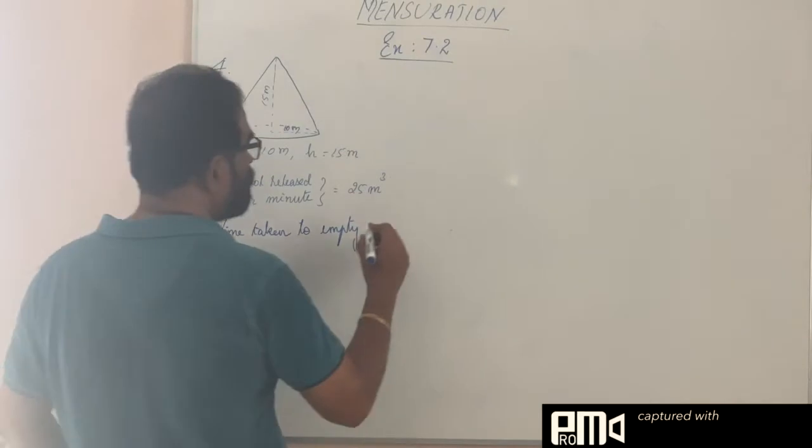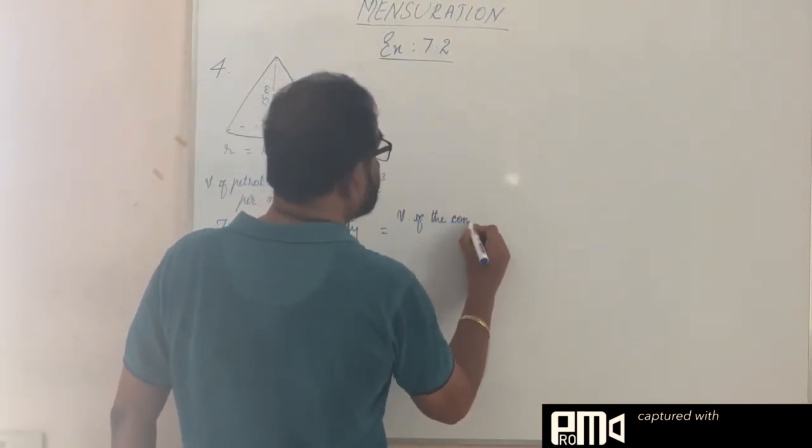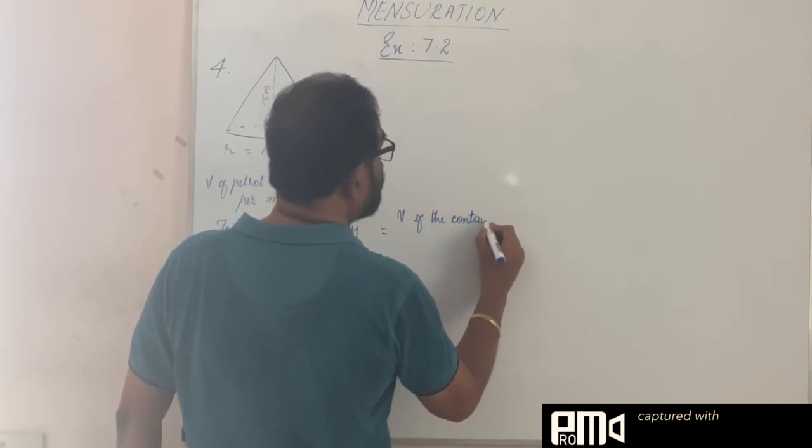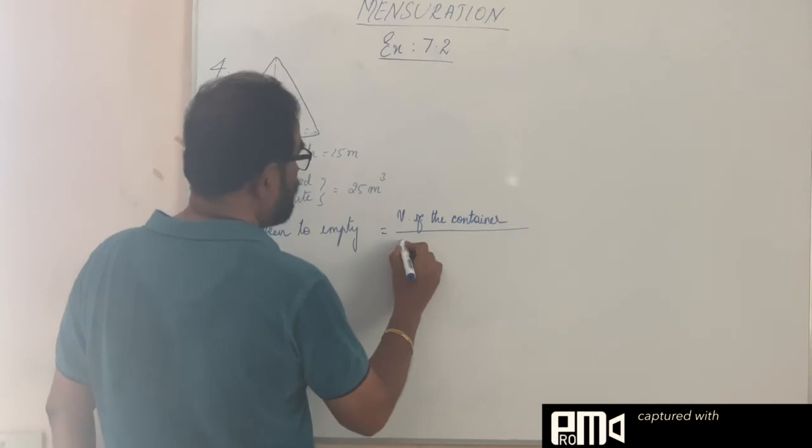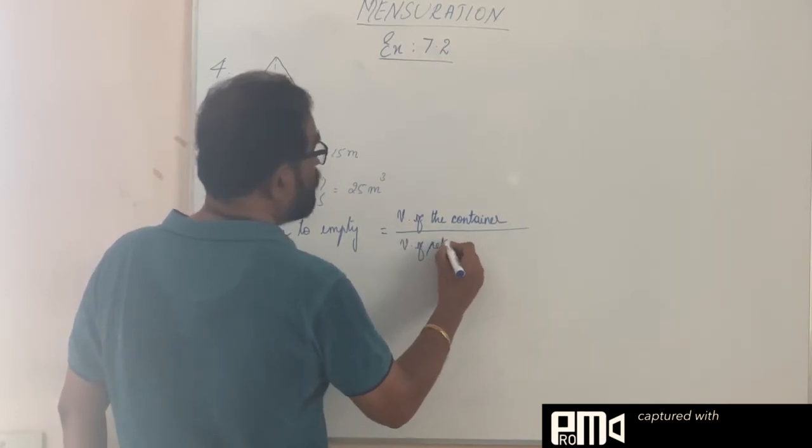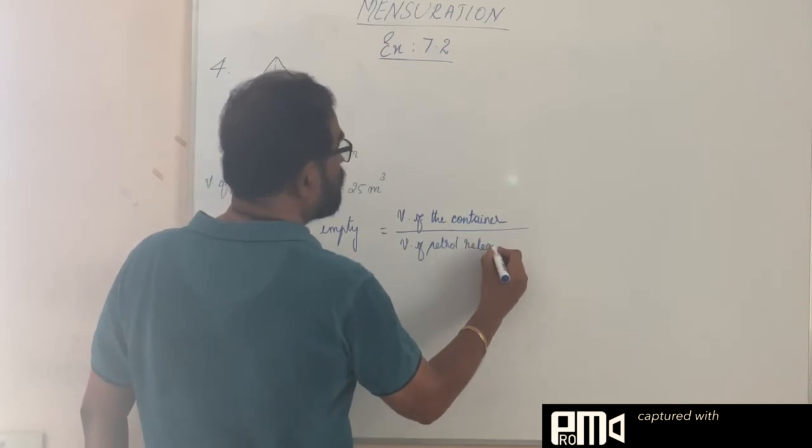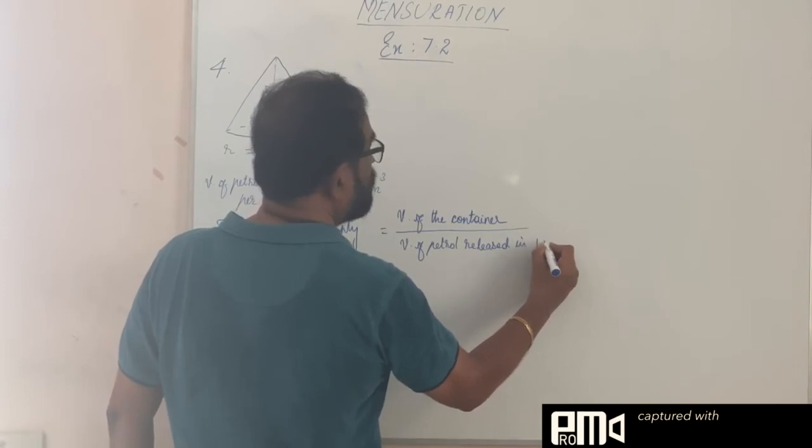So volume of the container, this is equal to volume of the container by amount of petrol released, that is volume of petrol released in one minute.